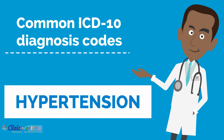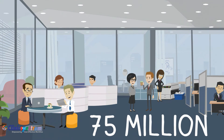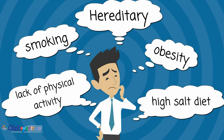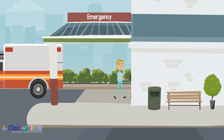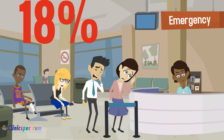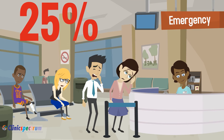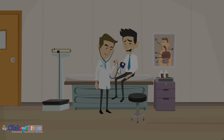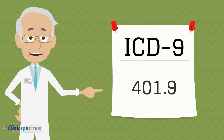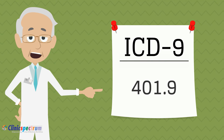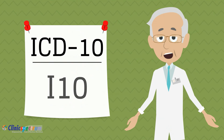ICD codes for hypertension: hypertension affects close to 75 million adults in the US and is a major risk factor for stroke, chronic kidney disease, and more. Between 2006 and 2011, there was a 25% increase in the number of people visiting US emergency rooms for essential hypertension. The ICD-9 code for hypertension is 401.9, while the new ICD-10 code is I10.